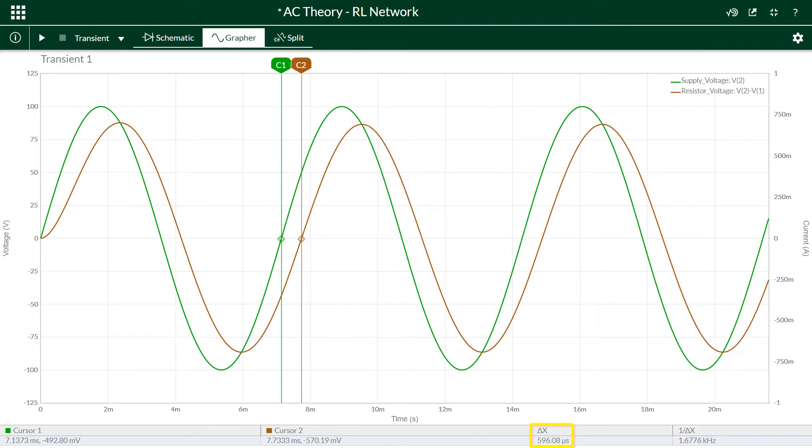We use X axis cursors to find the time difference between the supply voltage and the resistor voltage or current. We should choose the same point on both waveforms, such as when they cross the X axis or when they are at their maximum or minimum. The cursors give us a time difference between the voltages which we can convert into a phase difference or phase angle.